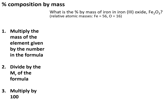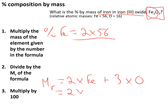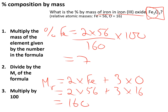To calculate the percentage composition by mass of an element in a compound — for example, the percentage of iron in iron oxide (Fe₂O₃) — we work out the total mass of iron divided by the relative formula mass of the compound, times 100. The total mass of iron is 2×56 = 112. The Mr of Fe₂O₃ is 2×56 + 3×16 = 160. So 112 divided by 160, times 100, gives 70%.